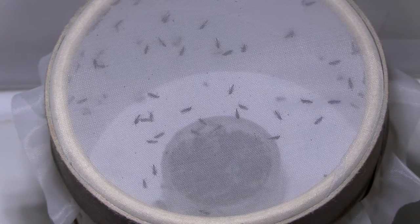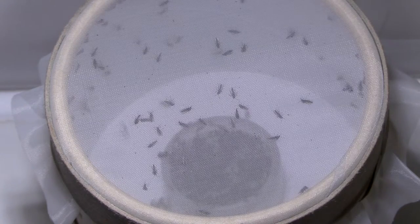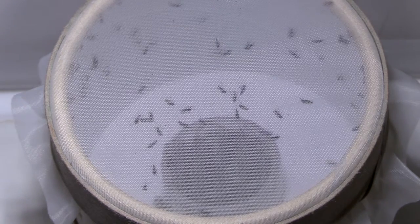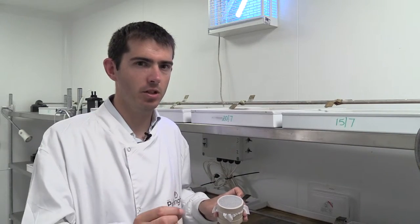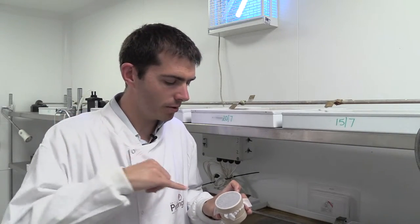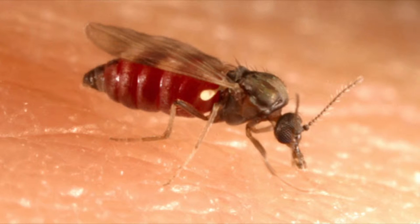Or we can actually intrathoracically inoculate these midges, so actually inject the midges with a virus suspension using a very fine glass needle, that's a drawn out capillary tube which we insert into the thorax just behind the wings or just behind the legs of the midge. Inject a tiny amount of virus solution and then let them develop.